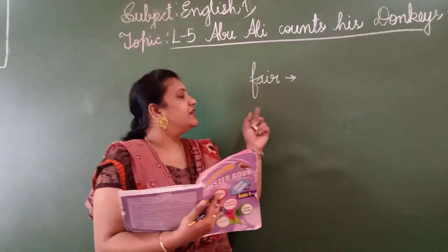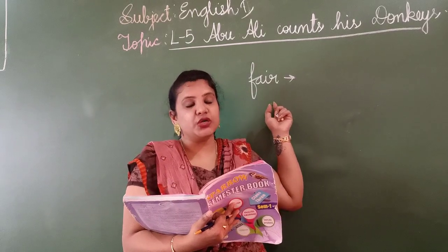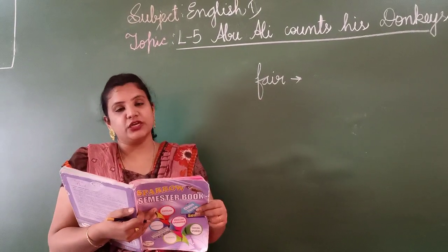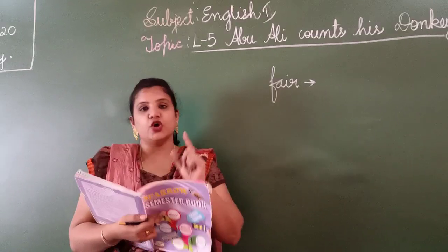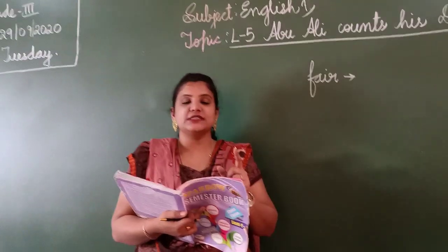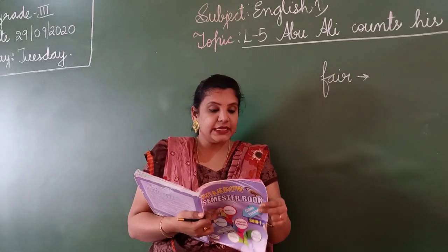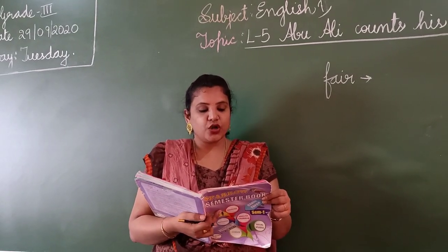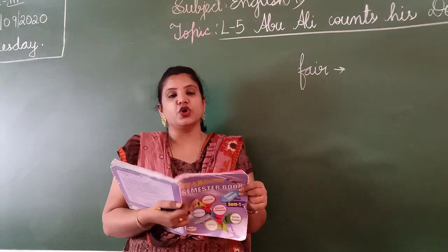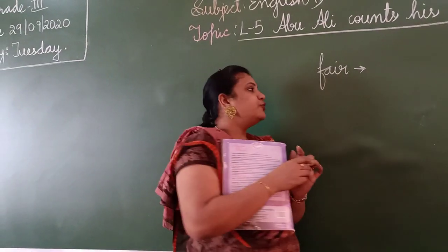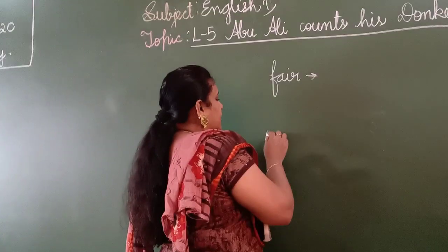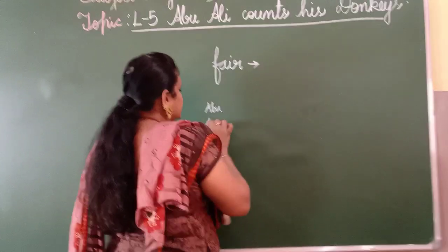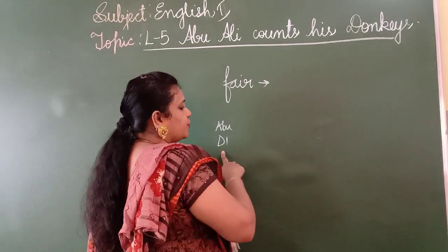So Abu Ali went to a fair to buy some donkeys and he bought nine donkeys. He rode on one of them and the rest followed him. Abu Ali sat on the first donkey.